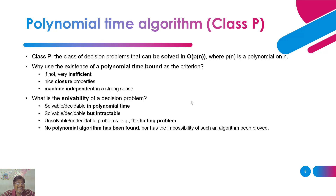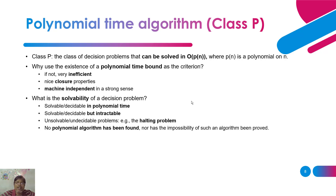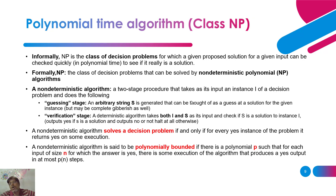Regarding the solvability of a decision problem: yes, it is solvable in polynomial time, but it may be intractable in polynomial time — meaning we cannot always track convergence easily. As for unsolvable problems in Class P, the halting problem is one: no polynomial algorithm has been found for it, nor has the impossibility of such an algorithm been proved.